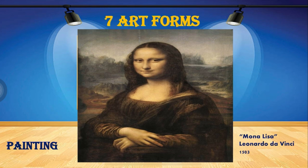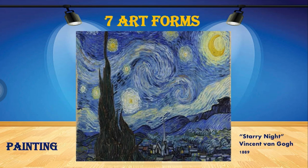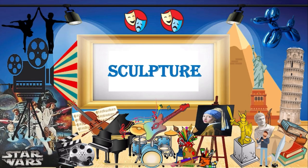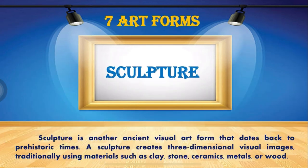The Mona Lisa was made in 1503. Another example is The Starry Night by Vincent van Gogh, made in 1889. The second one is sculpture. Sculpture is another ancient visual art form that dates back to prehistoric times. A sculpture creates three-dimensional visual images.